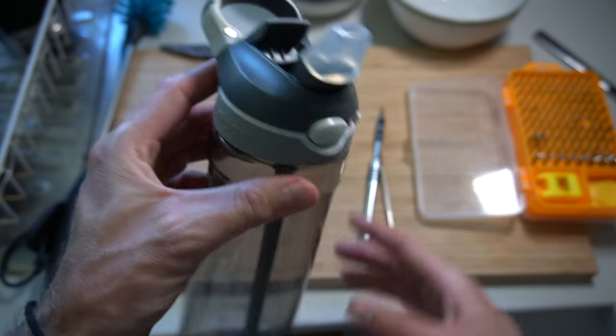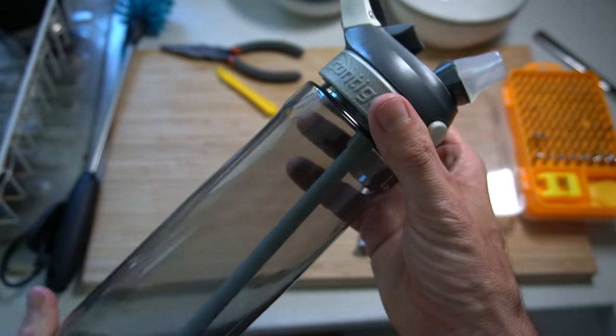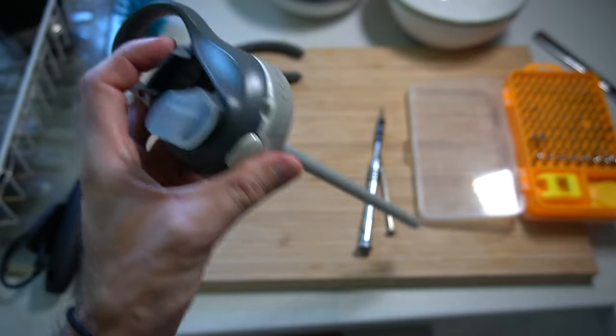These Contigo Autospout bottles with the pop-up lid and drinking straw are great. My kids absolutely love them.